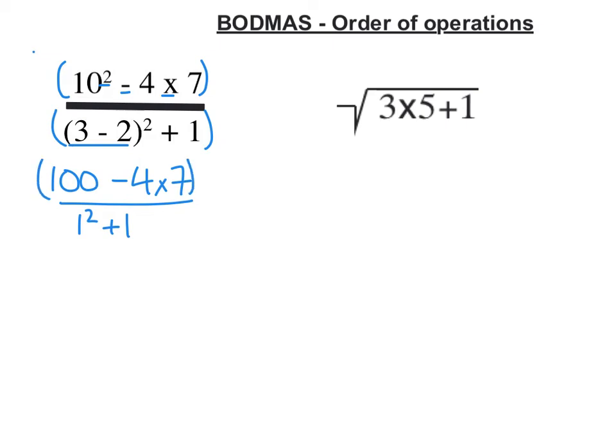Next on the top, in this bracket in the top, I am going to do the multiplying first. So it's going to be 100 minus 28 over. And now on the bottom I do the squaring first. So that's going to be 1 plus 1. Now I'm left with just one operation on the top and one operation on the bottom. So let's do those. And I'm going to get 72 over 2. And that becomes 36.